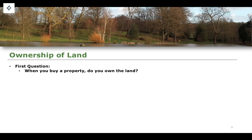Let's say you win the lottery, you don't have any mortgage to worry about, you get two million pounds and you buy a house outright with cash. When you do that, do you own the land itself? Are you the rightful and sole owner of that property, of the land on which that property is built? The answer is actually no — the technical answer is no.